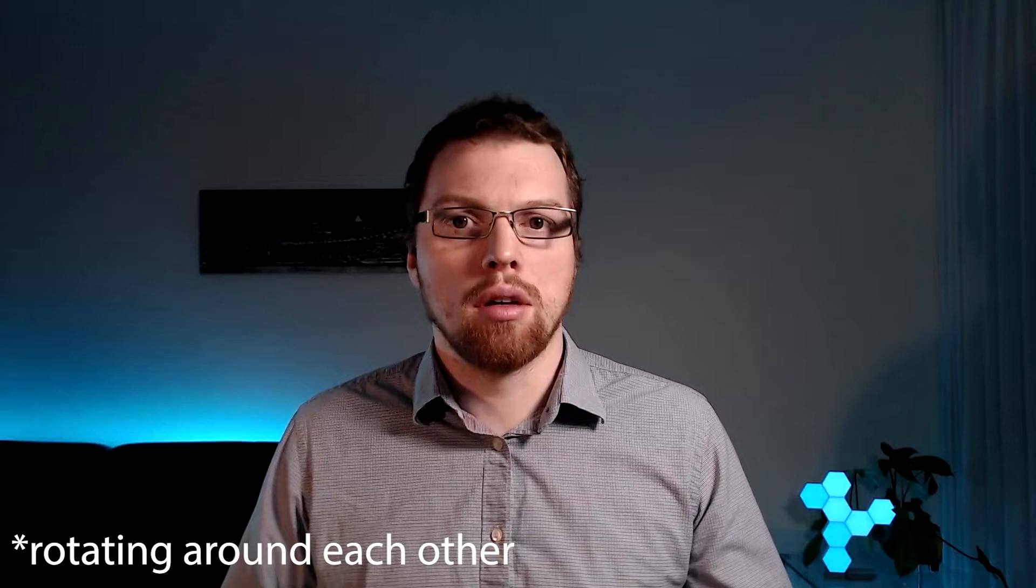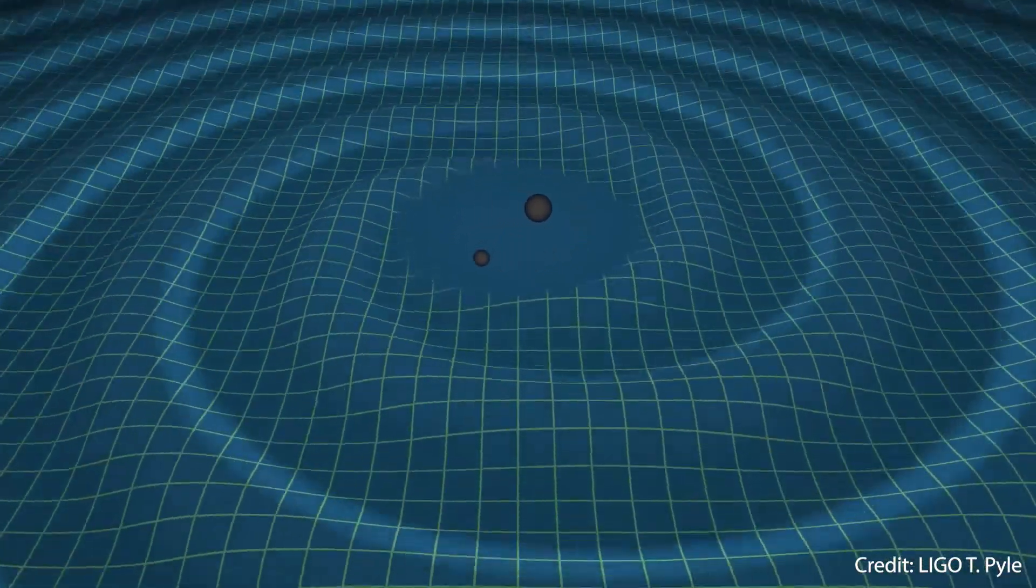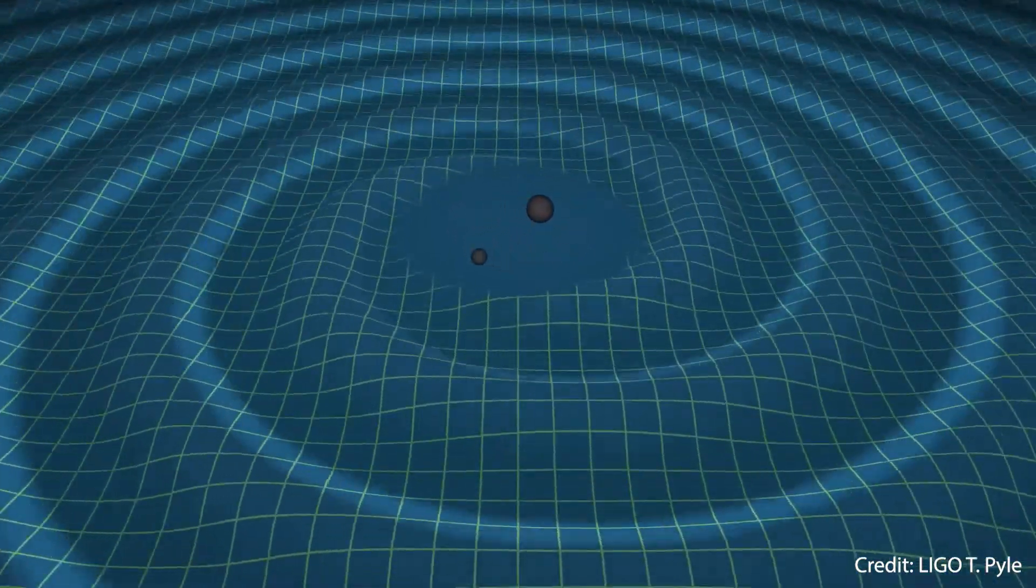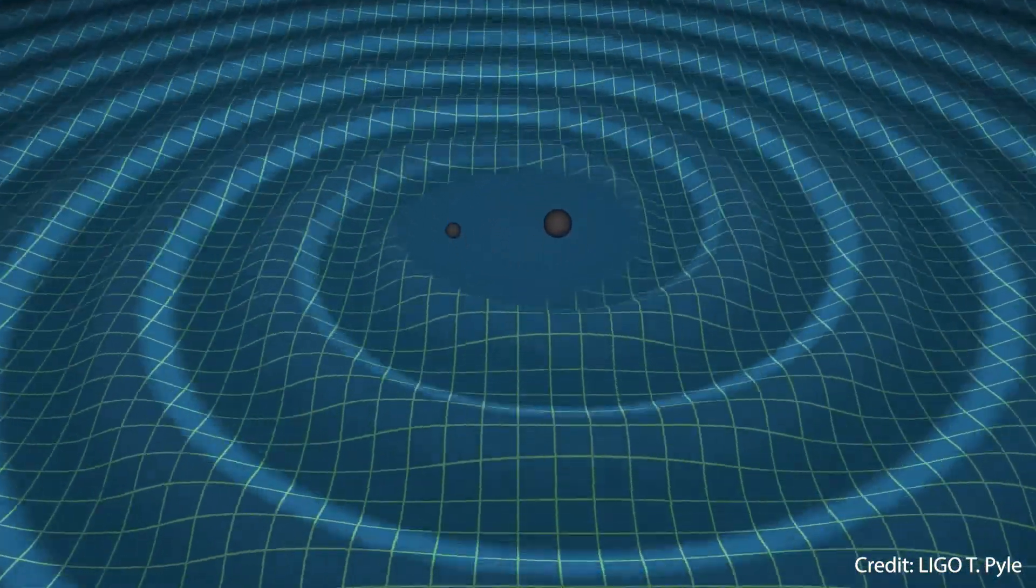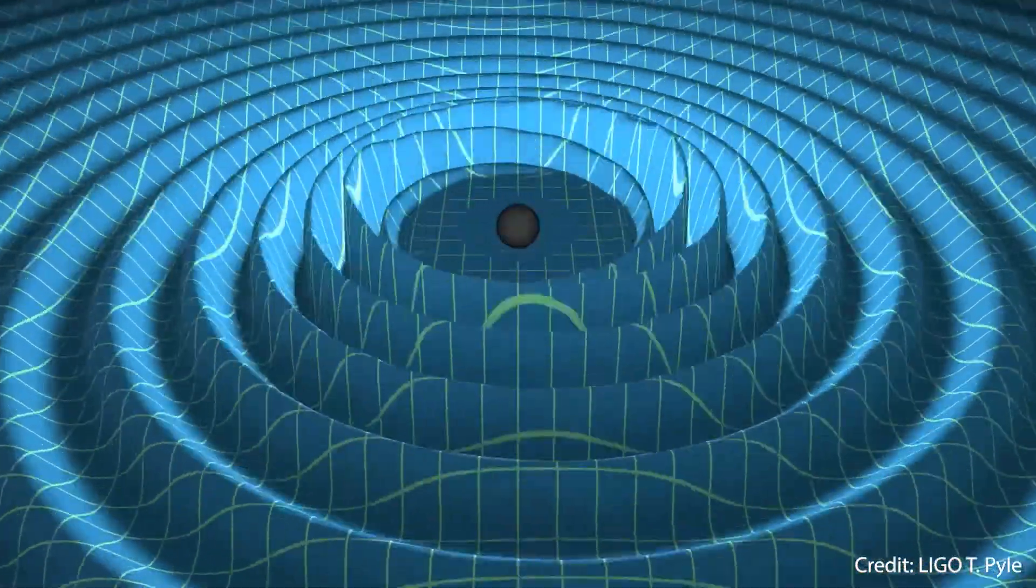Often when we're talking about gravitational waves, we're referring to those generated from two massive bodies rotating around each other and then combining. These massive bodies perturb space-time, curving it around them. When these two massive bodies orbit each other or combine, the space-time curvature interacts in a way that generates large waves or ripples that propagate out into space.